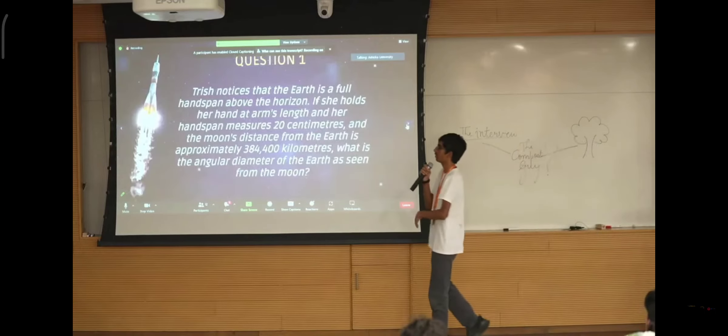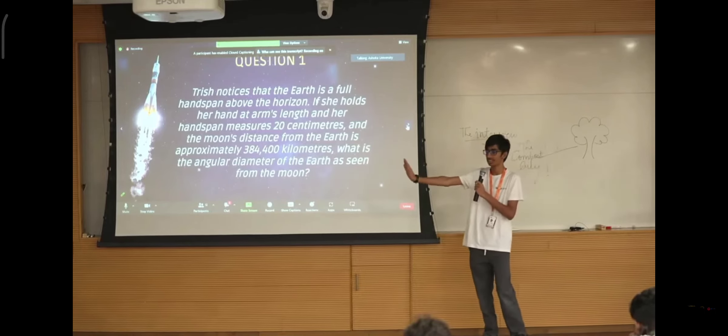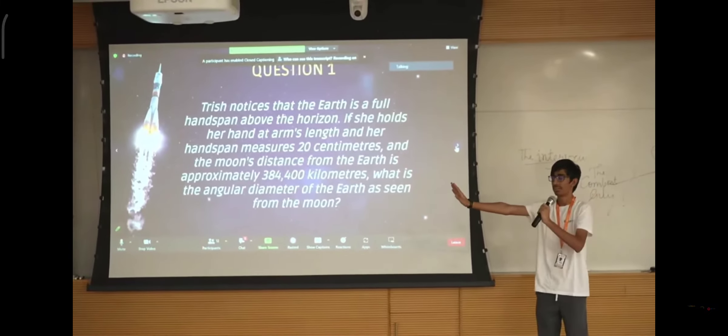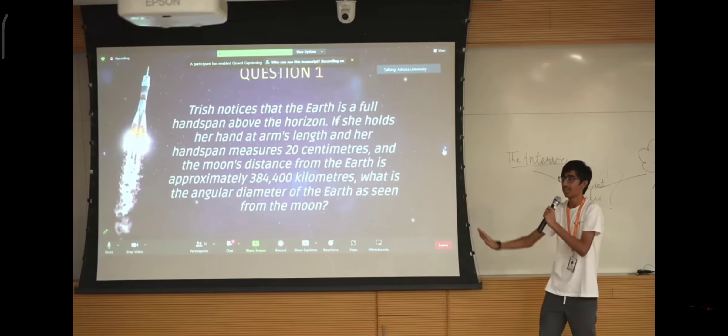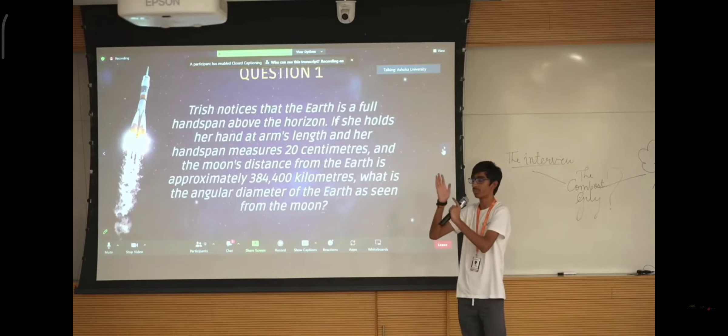Alright so question 1 is a very simple question. So basically Trish or the main character, she kind of holds out her hand like this. And when she holds out her hand like this, the earth is covering, the earth is being covered from her perspective and her hand is covering the earth. And from the story we know that the hand span measures 20 centimeters, which is just the distance from the bottom of your hand to the top of your hand. And the arm span width is 60 centimeters. And the moon distance from the earth is approximately 384,400 kilometers. And based on this information, what is the angular distance of the earth as seen from the moon?